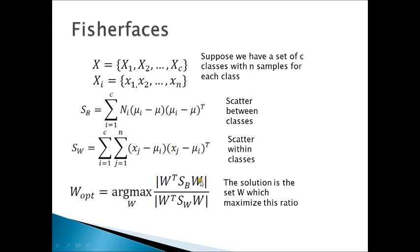So basically, this value can be interpreted as, since this is related to SB, and SB is the scatter between classes, and SW, which is in the denominator, is the scatter within classes, what we are trying to do here is maximize the ratio of between classes to within classes scatter.